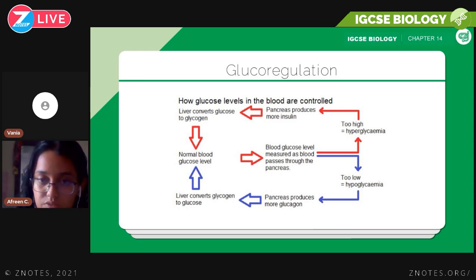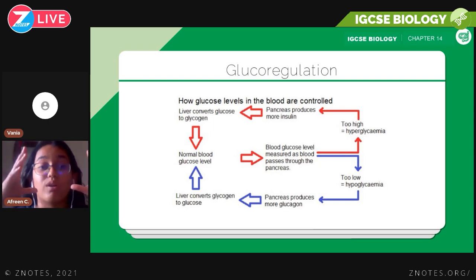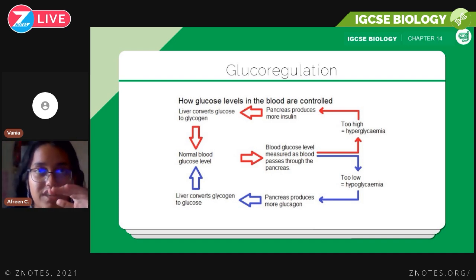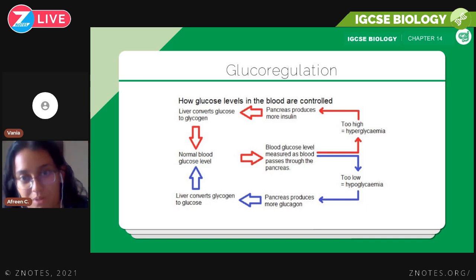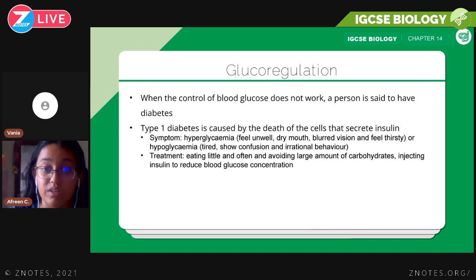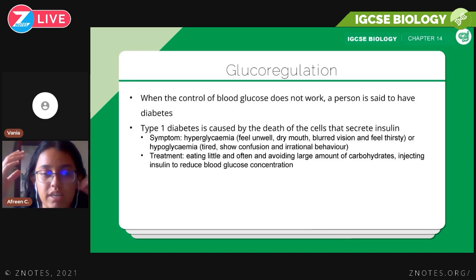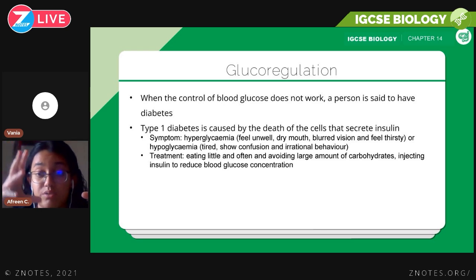This diagram is actually quite useful — take a second look and maybe take a screenshot, because sometimes if you can't describe your answer in words, diagrams help you get the message across to the examiner. This process is called glucoregulation. When glucoregulation doesn't work in a person, that person is said to have diabetes. For IGCSE Biology you need to know about type 1 diabetes, which is caused by the death of cells that secrete insulin.